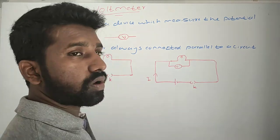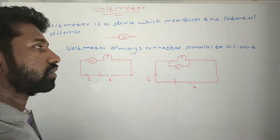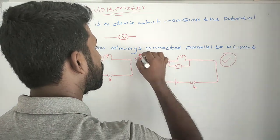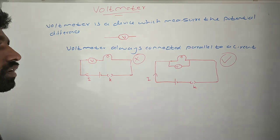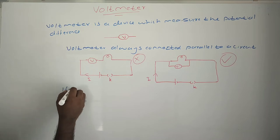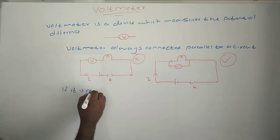So it is not blocking the current flow through the circuit. So this is the wrong circuit diagram. This is the correct circuit diagram. So we can explain why the voltmeter is connected parallel to a circuit.